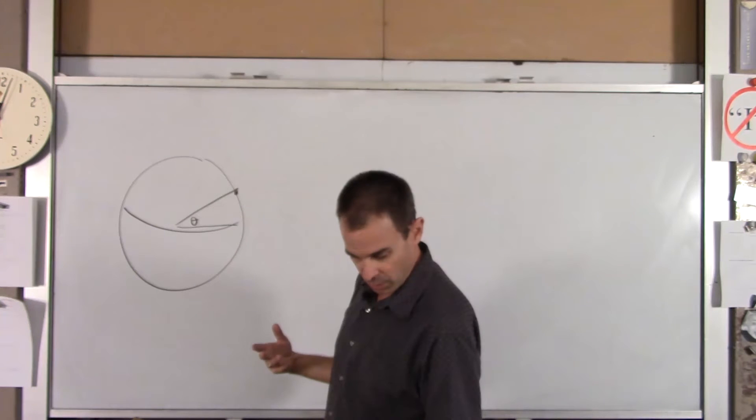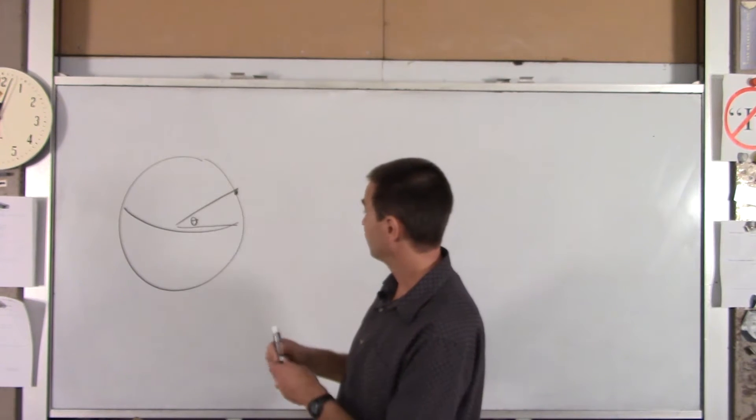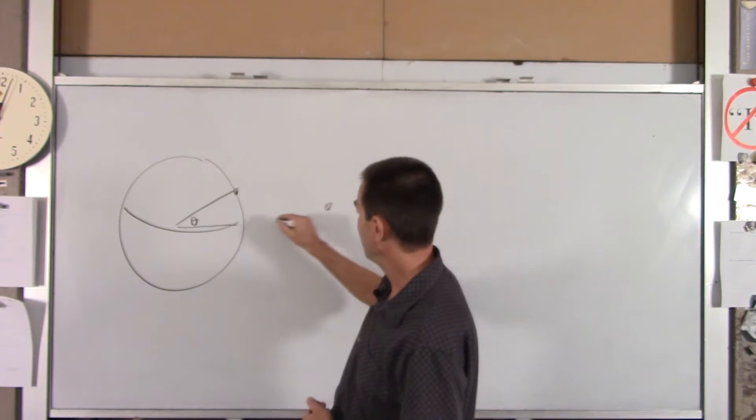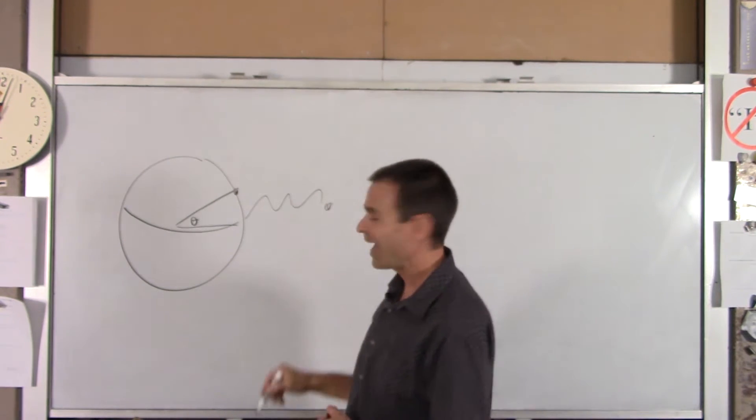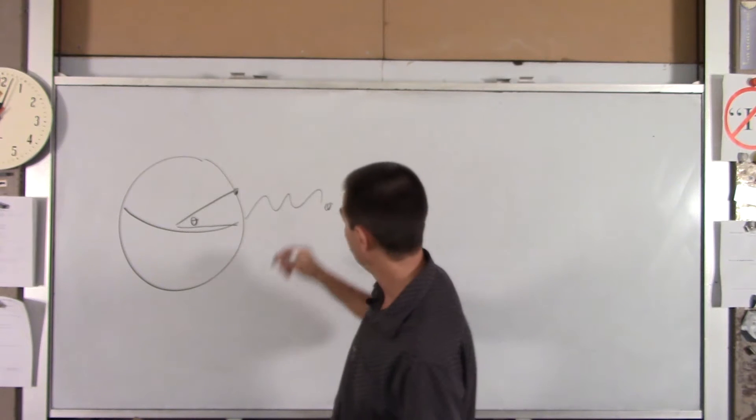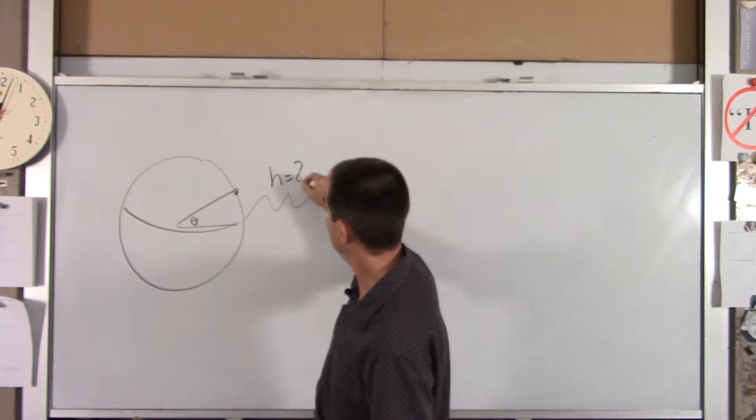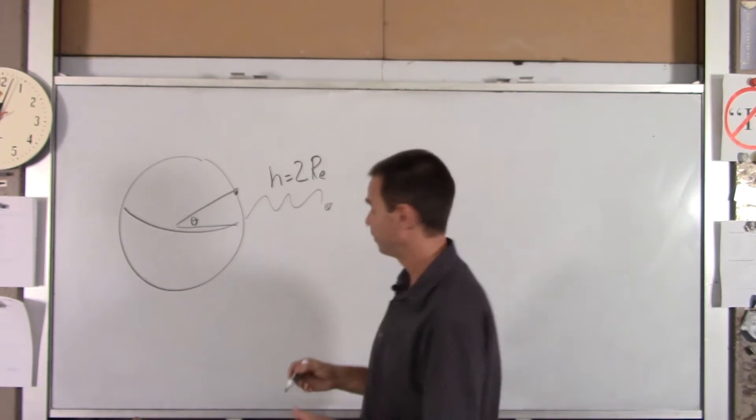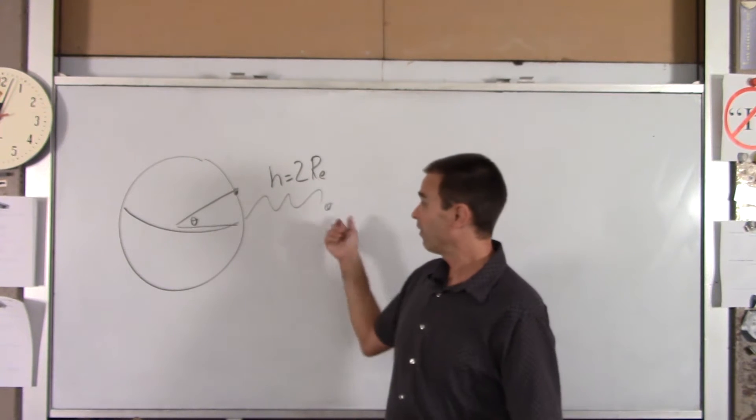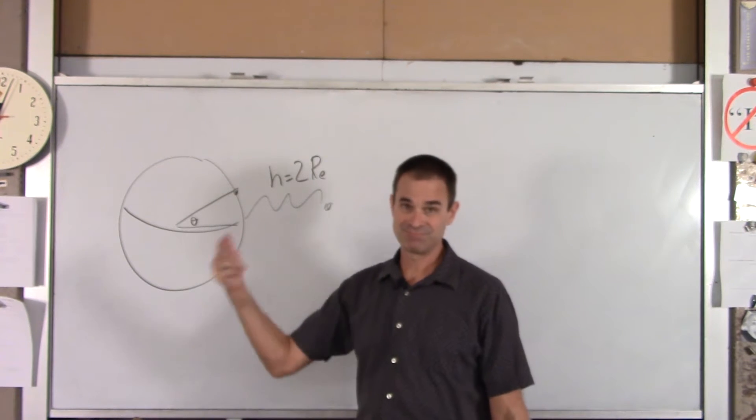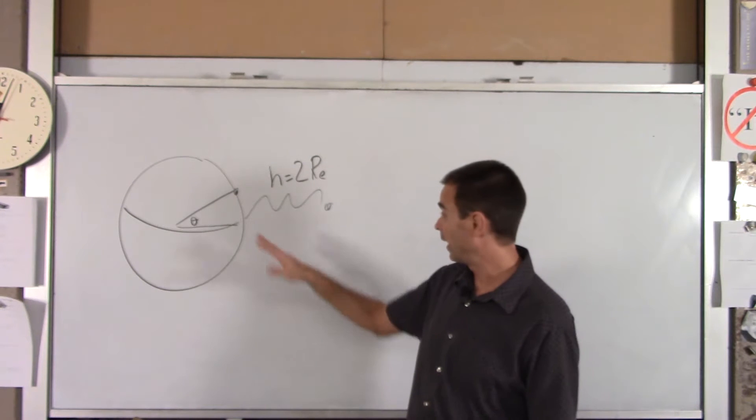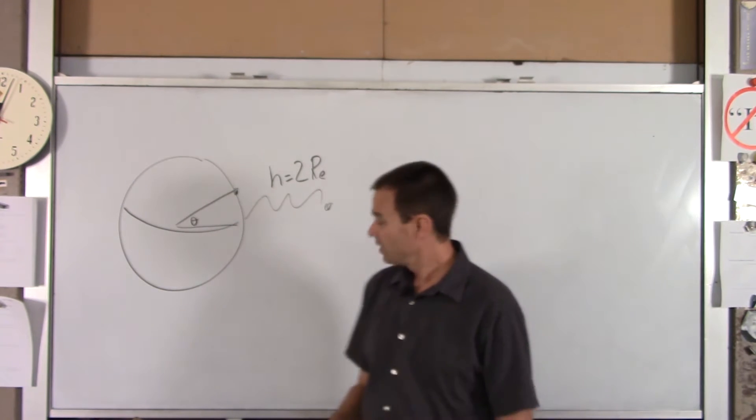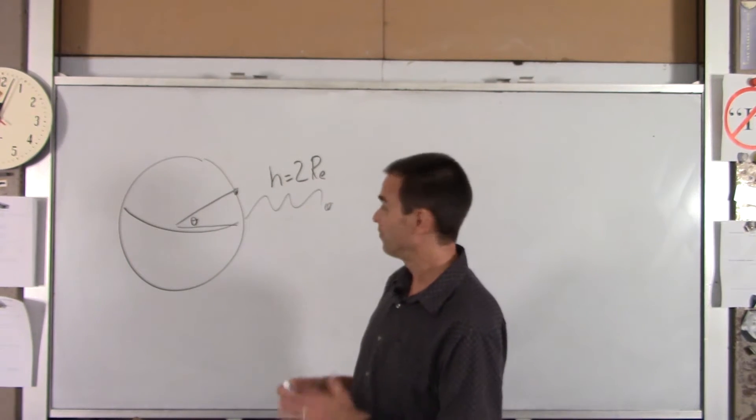We want to launch such that the spacecraft starts here and then reaches a circular orbit. And let's say that height above the Earth's surface is two times the radius of the Earth. Now, real quick, how far from the center of the Earth are we going to be? Three Earth radii.